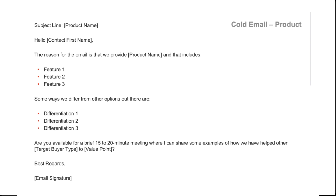Email number five gets into some product details. 'The reason for the email is we provide [product], which includes [feature one, two, three]. Some ways we differ from other options out there are [differentiation one, two, three]. Are you interested in a 15-20 minute meeting? Best regards.' We waited before hitting them with product details, and we focus on differentiation rather than just listing features.